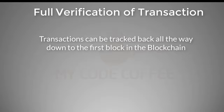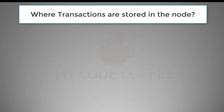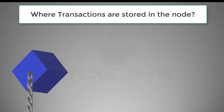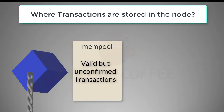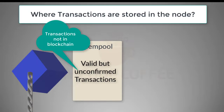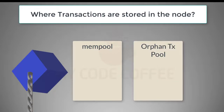Before we take a deep dive into the transaction verification process, it's important to explain where transactions are stored in a node. Transactions are stored in the blocks of the blockchain, but that's not the only place. Nodes also maintain a pool of valid but unconfirmed transactions known as the transaction pool, memory pool, or mempool. An unconfirmed transaction is valid in all senses but is not yet present in the blockchain. There is another pool called the orphan transaction pool — orphan transactions are those whose input points to a transaction not known to the node. The node keeps such transactions in the orphan pool until it receives the transaction being pointed to.